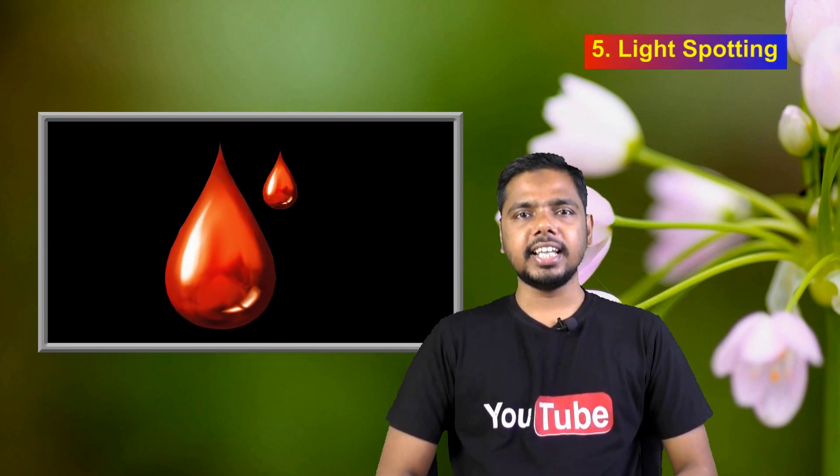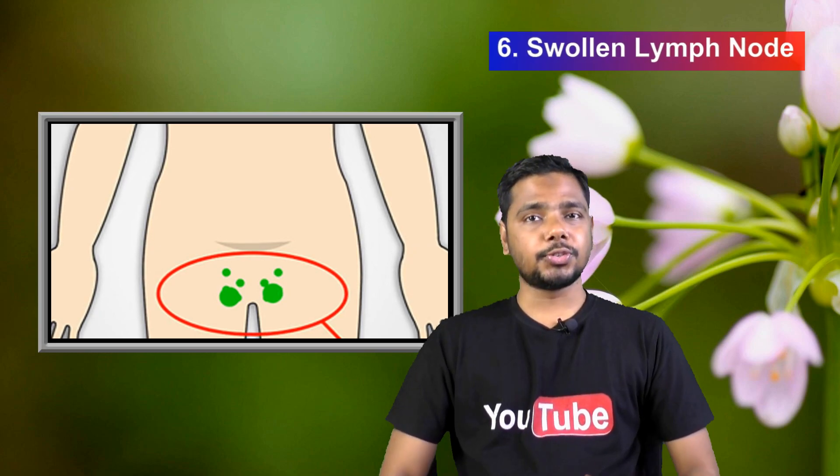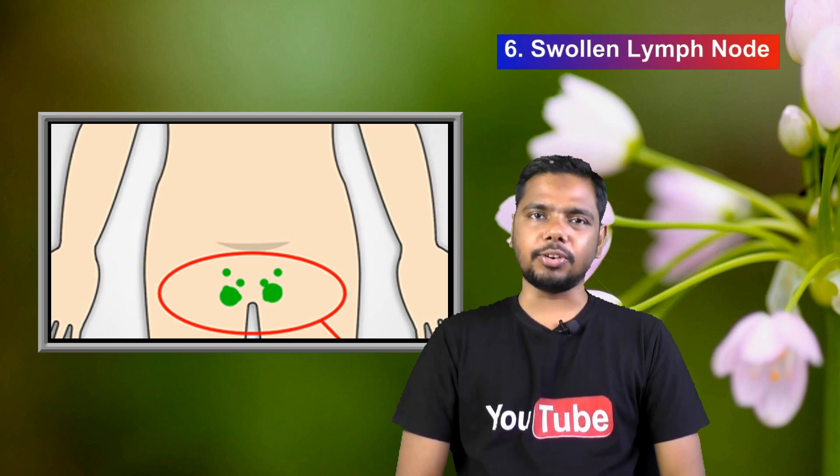Number five: spotting. Women can experience a small amount of spotting during their ovulation time. Increasing estrogen levels are the main cause of this light bleeding. The spotting color may vary from pink to red to brown. Remember, it is also a symptom of early pregnancy.